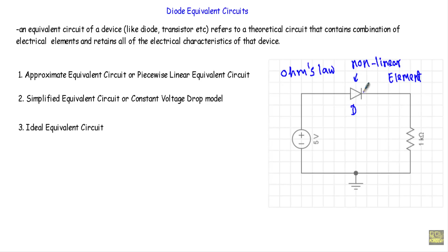That's why when we encounter any non-linear element in a circuit, we have to replace those non-linear elements with their equivalent circuit. So at first you have to understand what is an equivalent circuit. An equivalent circuit of a device like diode or transistor refers to a theoretical circuit that contains a combination of electrical elements.